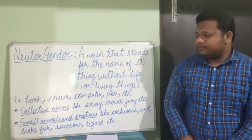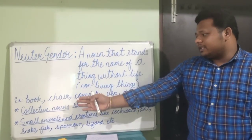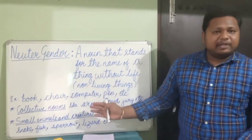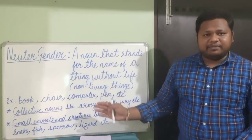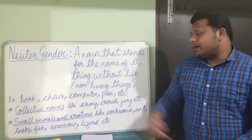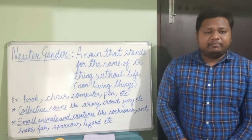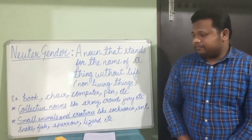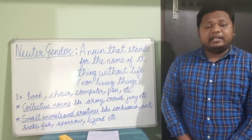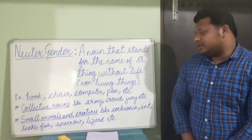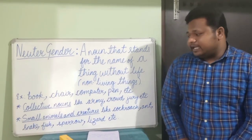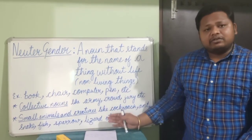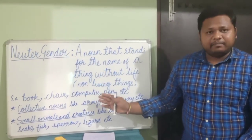Neuter gender: examples include book, chair, computer, and pen. Collective nouns like army, crowd, and jury also come under neuter gender. The names of some animals and creatures like cockroach, snake, fish, sparrow, and lizard are also categorized under neuter gender.